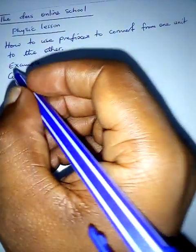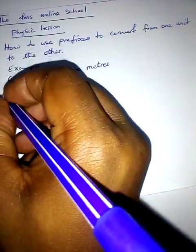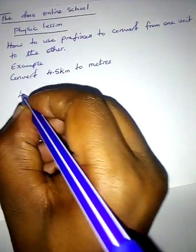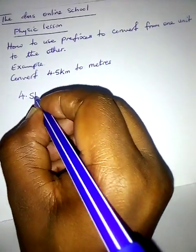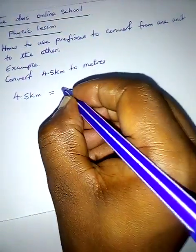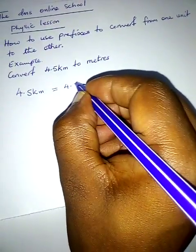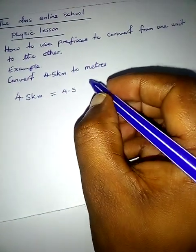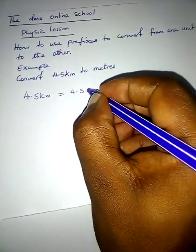to meters. So simple! What we are going to do here is to say 4.5 kilometers is equal to 4.5 - this 'kilo' stands for 10 to the power of 3. All right, so you say times